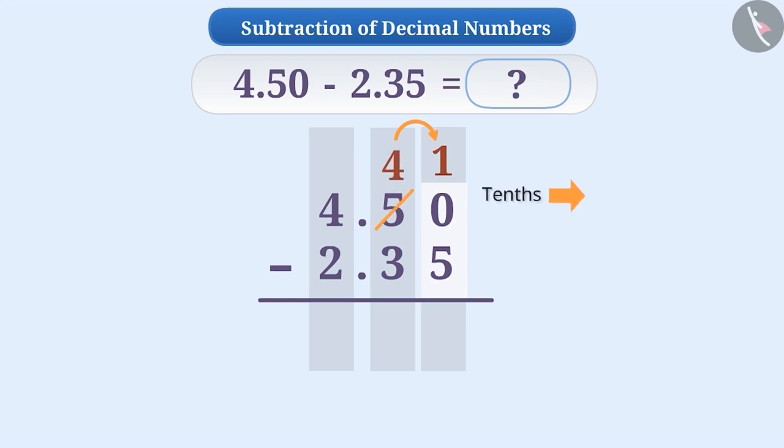Since the value at the tenths place is 10 times the value at the hundredths place, therefore, if we borrow 1 from the tenths place, then the value at the hundredths place will be 10. In brief, 1 tenth will be equal to 10 hundredths. Now in the hundredths place, there are 10 and 0. The total will be 10 plus 0 is equal to 10. Now we can subtract 5 from 10. So the result in the hundredths place will be 5.